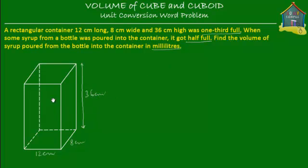Now it's one-third full, which means that if the capacity of this container is divided into three parts, then one part is already occupied. If this is 1, this is 2, and this is 3, then one-third would be here. So this one-third of the container is occupied. Let's drop some color into it to show that there is some syrup already existing in this container.